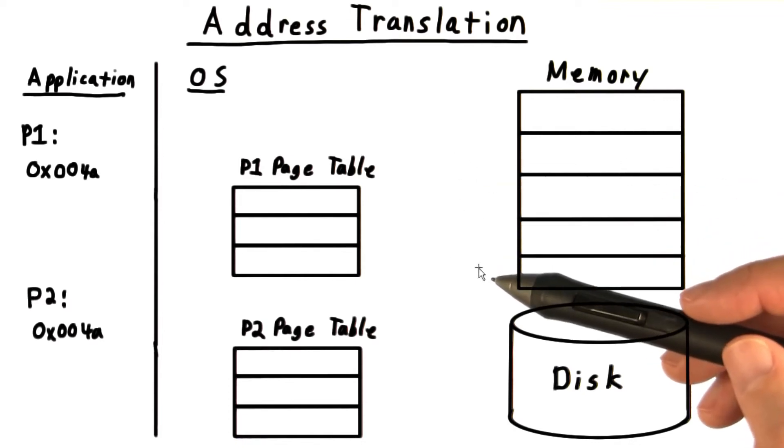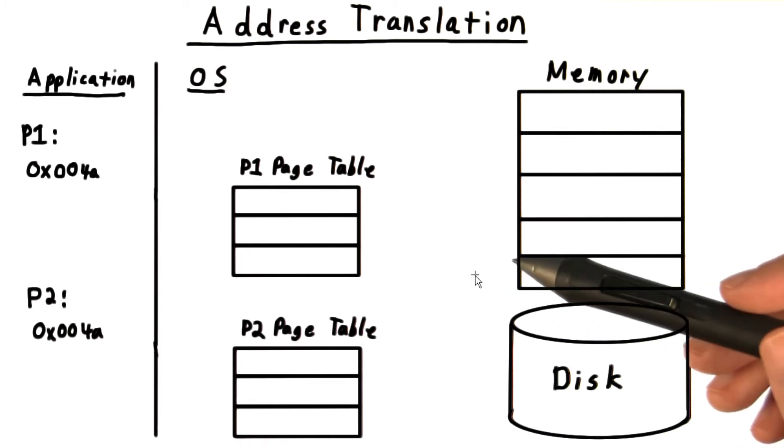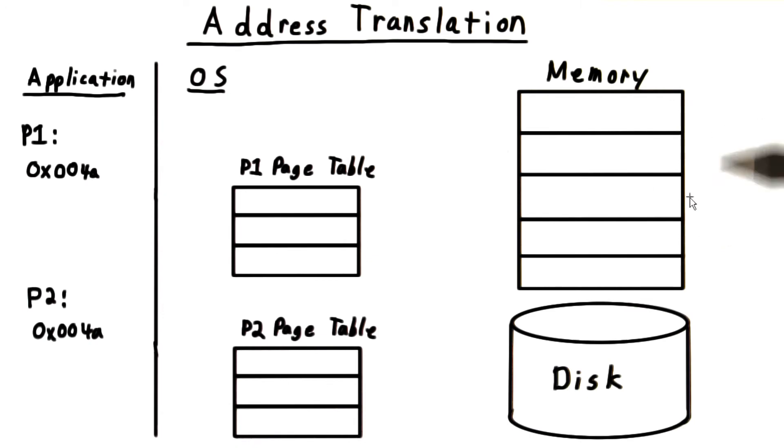This indirection allows us to accomplish several things. First, it allows us to have an address space that is bigger than physical main memory. This is convenient when main memory itself isn't big enough and we need to use the disk, or when we want to map other storage devices and treat them like memory.